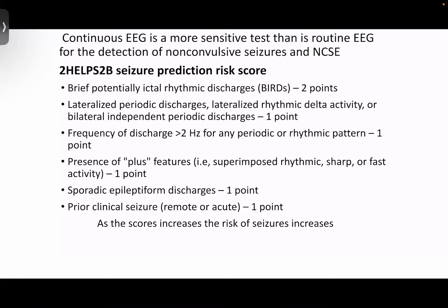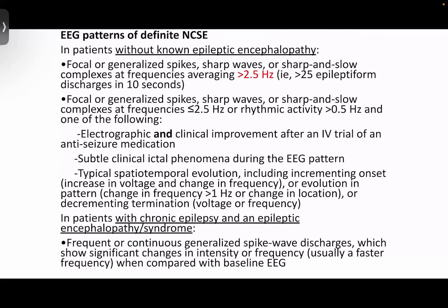Continuous EEG is a more sensitive test than routine EEG for detection of non-convulsive seizures, and there are seizure predictions based on EEG activity. For definite non-convulsive status epilepticus without known epileptic encephalopathy, there will be generalized spike and sharp waves or sharp-and-slow complexes at a frequency of more than 2.5 Hz. Sometimes these patients can show electrographic and clinical improvement after a trial of IV antiseizure medication. Patients with chronic epileptic encephalopathy can show frequent or continuous generalized spike-wave discharges with significant changes in intensity or frequency compared to baseline EEG.